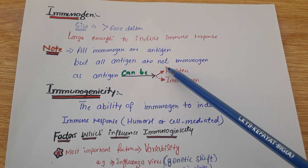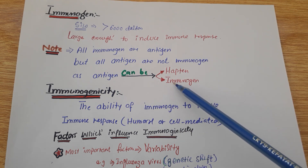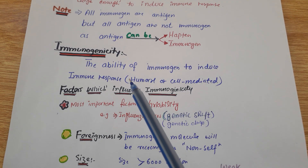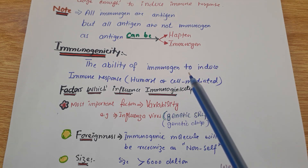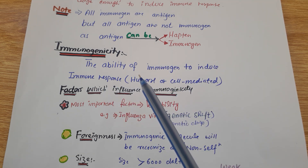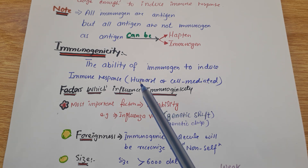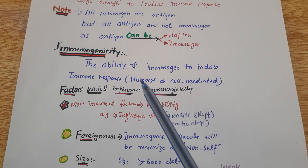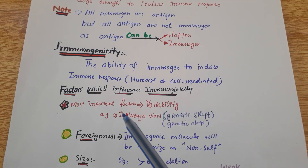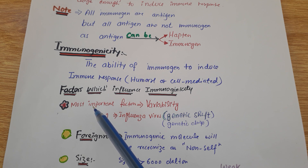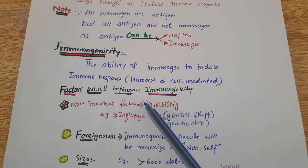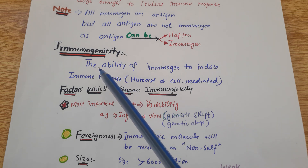Immunogenicity is actually the ability of an immunogen to induce the immune response. I already uploaded another video on humoral and cell-mediated immunity. This immune response consists of humoral and cell-mediated immune response. Now let's talk about the factors which influence immunogenicity.